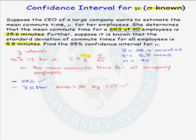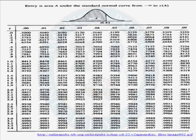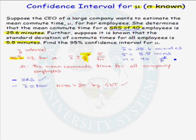The only thing we don't know yet is the z critical value. We use a standard normal table to find it. For a 95% confidence interval, 95% of the area is in the middle, leaving 5% — or 2.5% in each tail. We need the z-value at the 97.5th percentile. Looking that up in the standard normal table, the 97.5th percentile corresponds to a z-value of 1.96. So z-star equals 1.96.